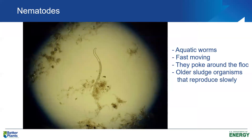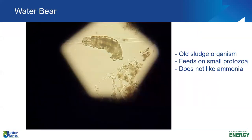Nematodes are more prevalent and can be seen occasionally in extended aeration activated sludge. They're aquatic worms, fast-moving, and can be seen poking around the floc looking for food. They are older organisms that reproduce very slowly. Water bears are not seen very often but would be present in extended aeration activated sludge processes, oxidation ditches, and sequencing batch reactors operating at very long sludge ages with very low organic content.